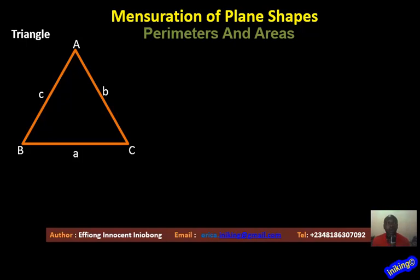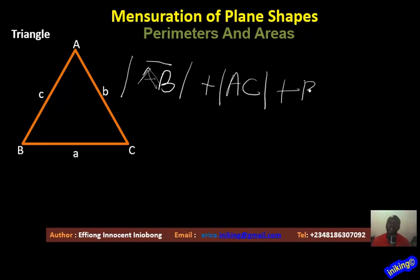If I want to obtain the perimeter of the triangle we have on the screen or this particular slide, we simply mean the length of the side AB, the length of that side, plus the length of the side AC and the length of the side BC. This total boundary length is what we mean by the perimeter of this triangle.